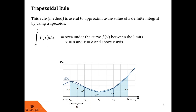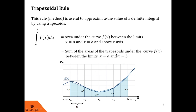Now let us calculate this area. To do so, let us partition this area into several intervals of equal distance. So these partitions are from x0 to x1, x1 to x2, x2 to x3, and x3 to x4. All these intervals are of equal distance h. Observe that each of these partitions forms a trapezoid. Then this total area is nothing but the sum of the areas of the trapezoids under the curve f of x between the limits x equals a and x equals b.